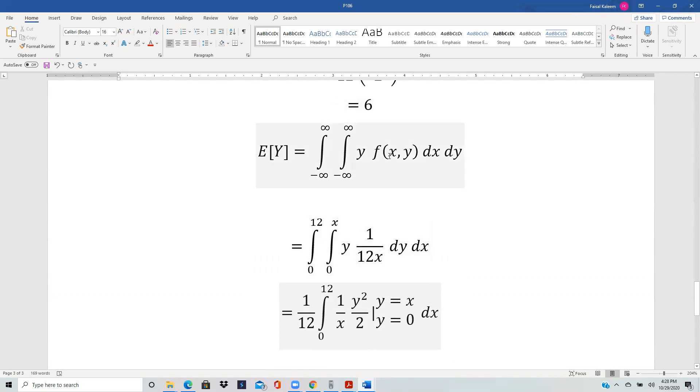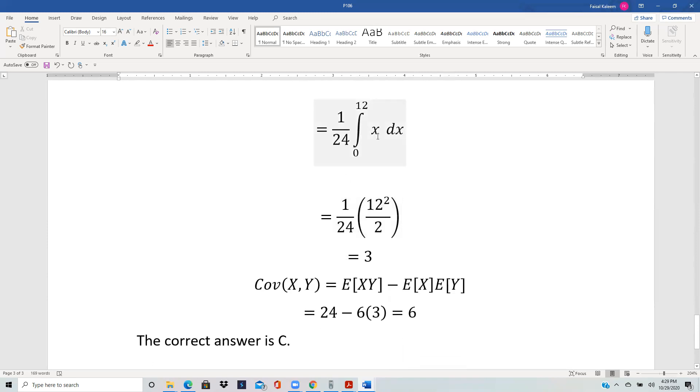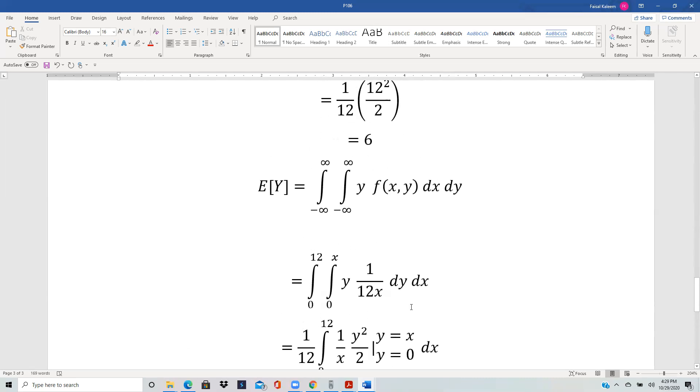Similarly, E[Y] is the double integral of y against the PDF. Here 1 over 12x is a constant. I can pull the 1 over 12 out of all the integrals. X I can't pull out because it's eventually going to turn into a variable. The integral of y is y squared by 2. We put in the limits, you get x squared by 2. The 2 joins in here and the x squared that you got here cancels with this x to just give you an x in the numerator. Then this one integrates to x squared by 2, which will be 12 squared by 2, and then you get 3. When you substitute the values, you get 6 for the covariance, so that is C.